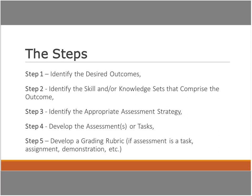The steps: Step one, identify the desired outcomes — your assessments should measure student achievement of the outcomes. Step two, for each outcome, identify the skills and knowledge items that make it up — a single outcome will have a knowledge set and a skill set. Step three, identify the appropriate assessment strategy to measure whether students have those skills or that knowledge. Step four, develop those assessments or tasks. Step five, if the assessment is a task, develop a grading rubric to accompany it.